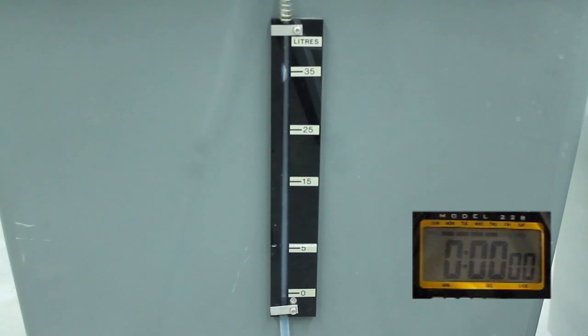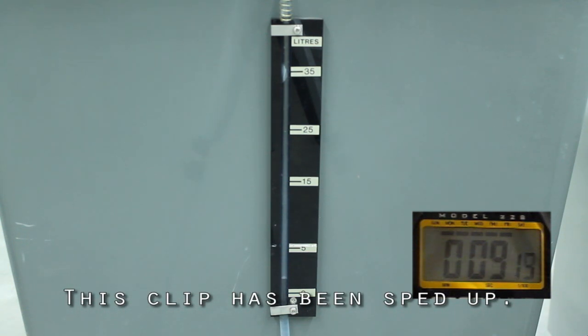Start the timer when the water line reaches 0 liters and stop it when it reaches 25. The volumetric flow rate is 25 liters divided by the measured time.